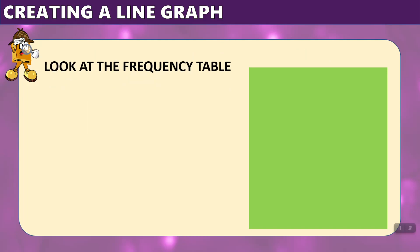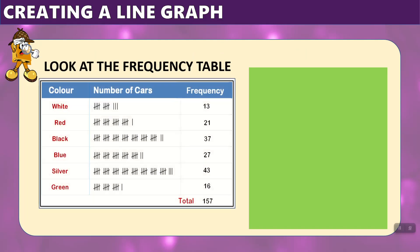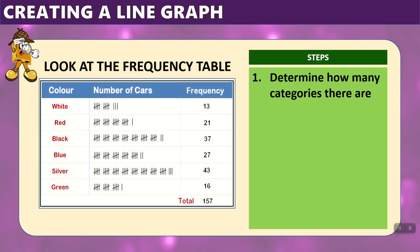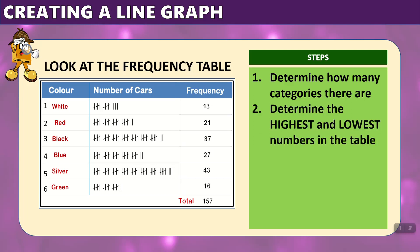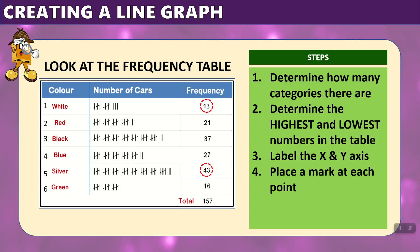We can create a line graph by looking at the frequency table and following these steps. First, we need to determine how many categories there are. In this case, we have 6 categories. Next, we determine the highest and lowest numbers in the table. We can see 43 is the largest and 13 is the smallest number. Then we label the x and y axes, place a mark at each point, and connect the points with one line after we're done.